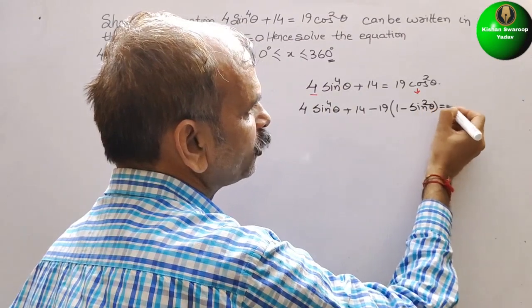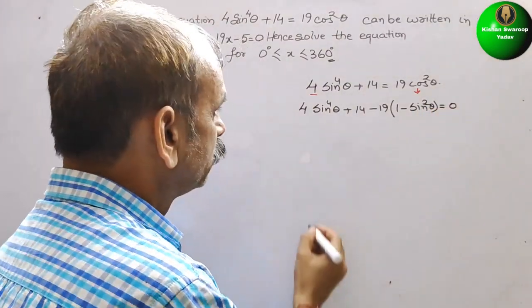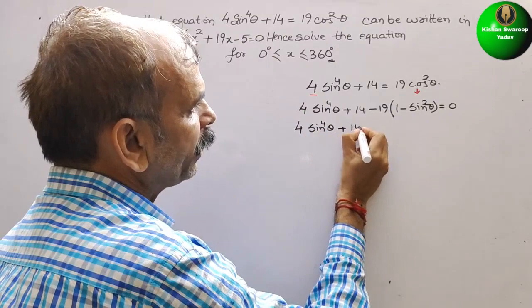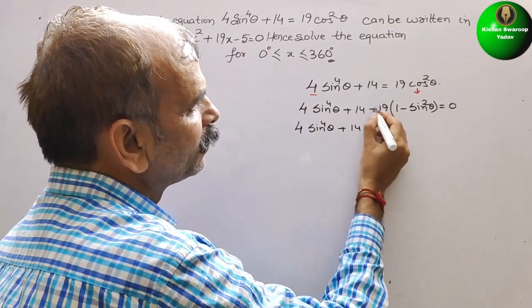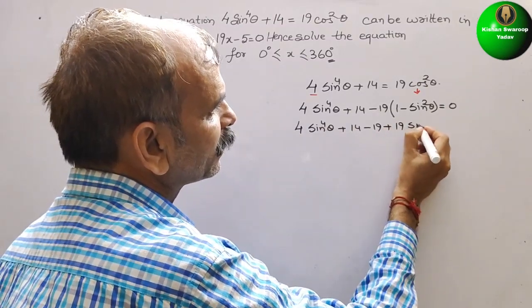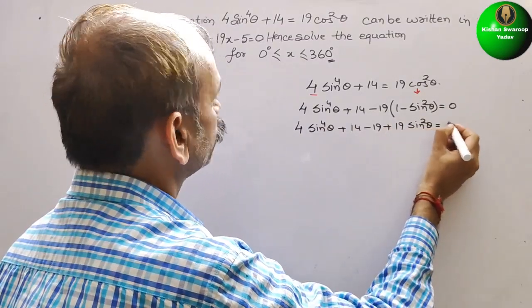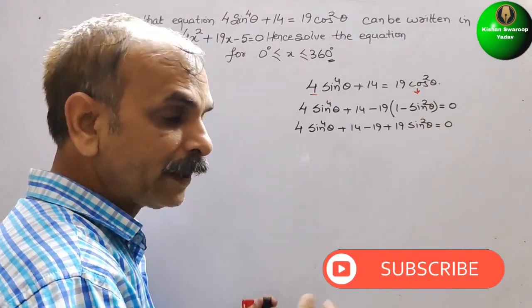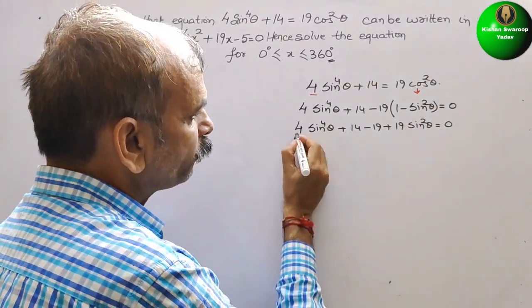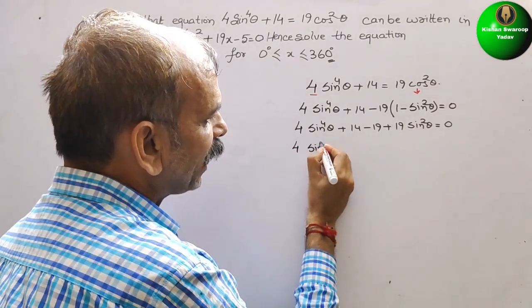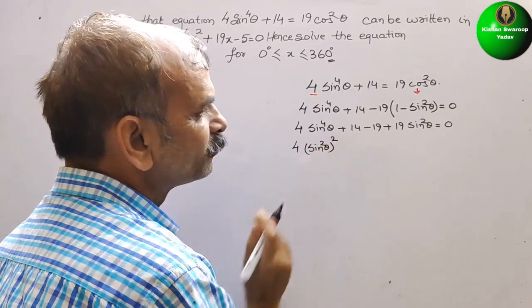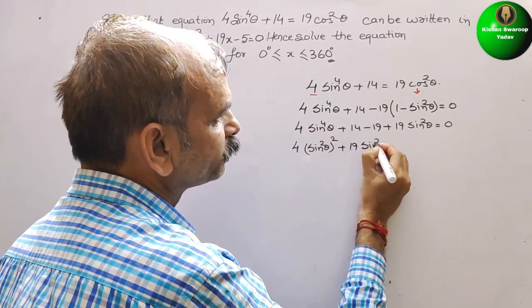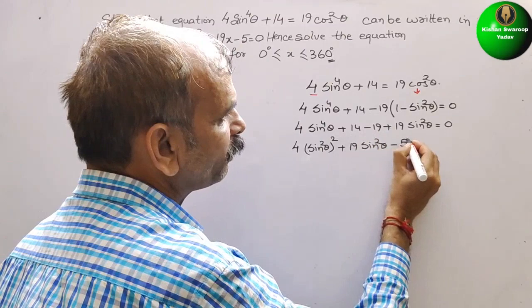...sin²θ, that is equal to 0. Solve this. So here you will get 4sin⁴θ + 14 − 19 + 19sin²θ = 0.